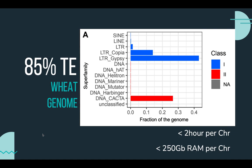we can annotate the genome in less than 2 hours per chromosome using less than 250 gigabytes of RAM per chromosome.